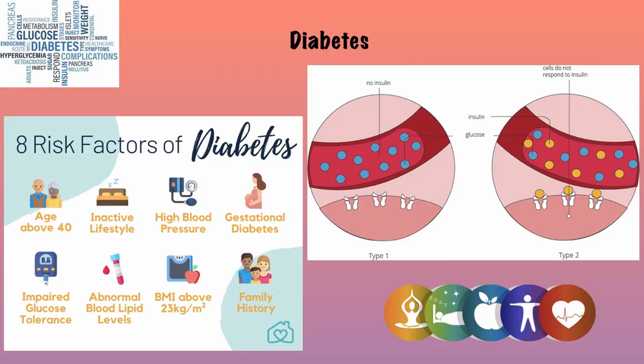Another deadly disease that is more common than we think is diabetes, which affects insulin production and use. In type 1 diabetes, the pancreas can't produce insulin, and in type 2, the pancreas doesn't produce enough or insulin can't be used effectively. This can be caused by a number of risk factors, such as excess body weight, high blood pressure, older age, not exercising regularly, and maintaining an unhealthy diet.